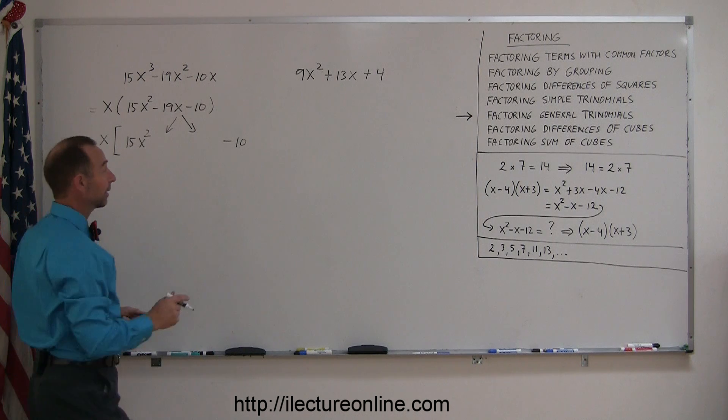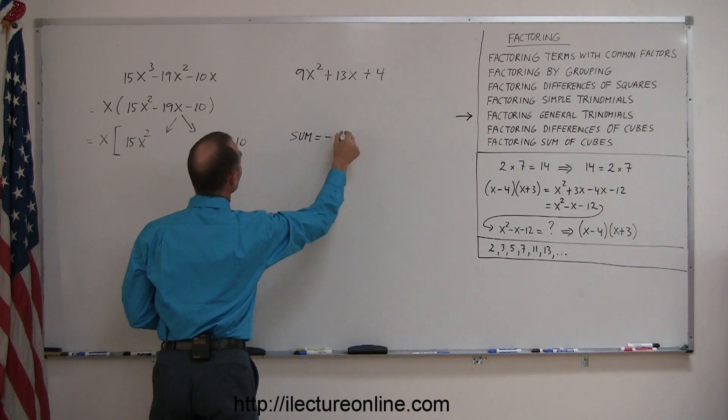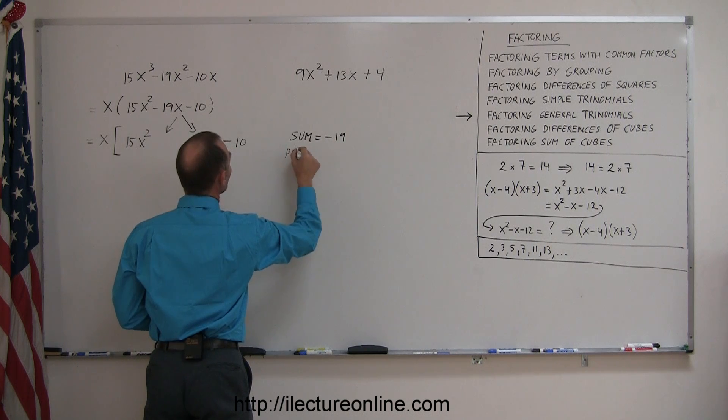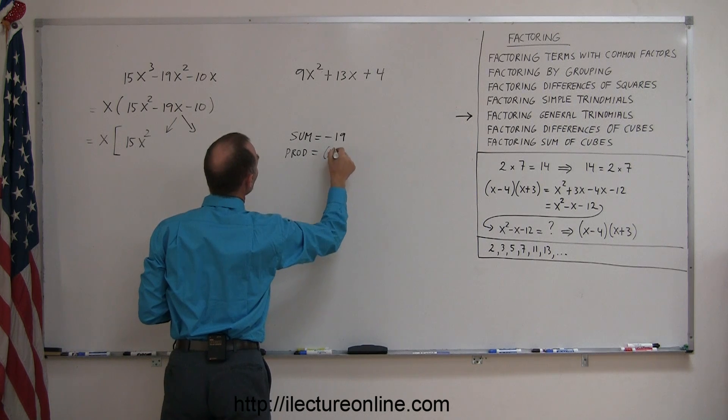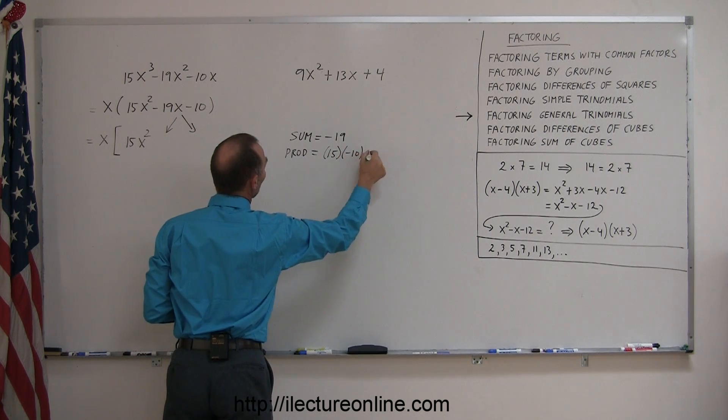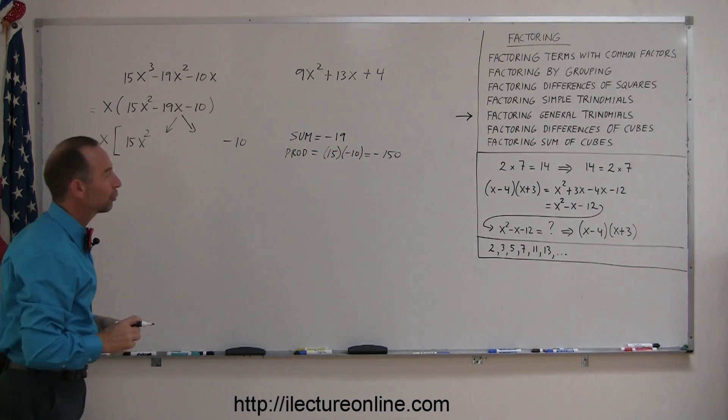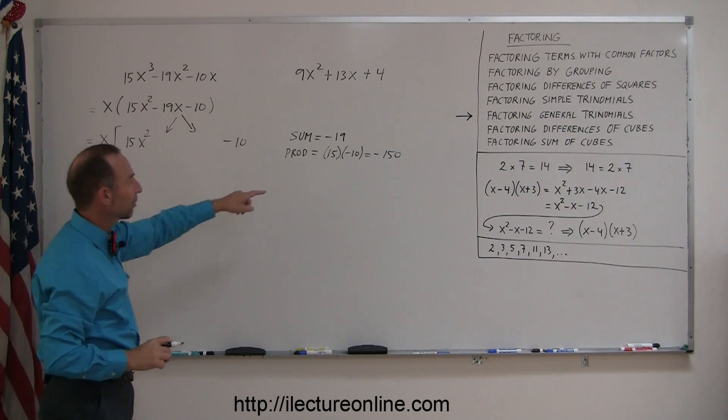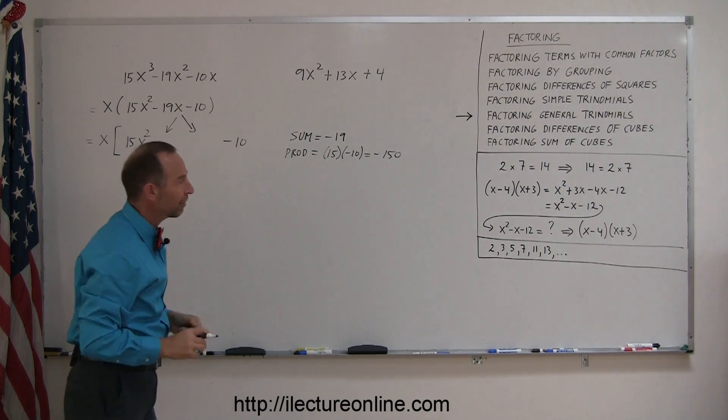The rule is that the sum of the two numbers that you're looking for must equal minus 19, and the product must equal the product of the outer two terms, so must equal a positive 15 times a negative 10, or minus 150. So now you're looking for two numbers: when you add them together you get minus 19, when you multiply you get minus 150.